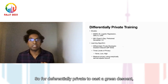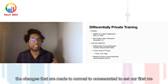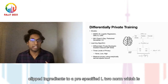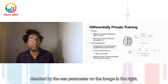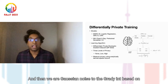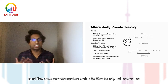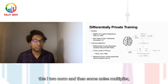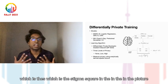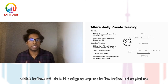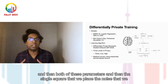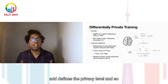For differentially private stochastic gradient descent, the changes made to normal SGD are: first, we clip the gradient to a pre-specified L2 norm, denoted by the C parameter. Then we add Gaussian noise to the gradient based on this L2 norm and a noise multiplier sigma-squared. Both of these parameters — C and sigma-squared — define the privacy level.